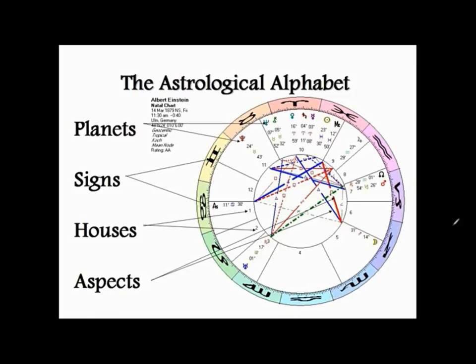The final component in the astrological alphabet is the aspects — these geometric lines you can see in the center of the chart. You can see a red line showing that Jupiter and Uranus were at a 180-degree angle. These solid blue lines are showing trines or 120-degree angles. These geometric angles formed between the planets are almost like telephone wires — channels along which communication and mutual influence can occur.